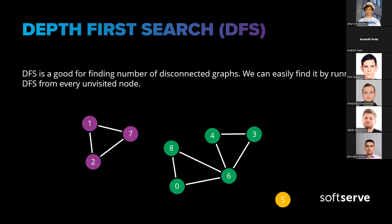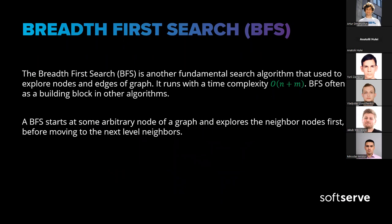Now let's look at breadth-first search (BFS). BFS is another fundamental search algorithm used to explore nodes and edges of a graph, running with time complexity O(N + M). BFS is often used as a building block like DFS, but it's particularly useful for finding the shortest path on an unweighted graph. BFS starts at some arbitrary node and explores all neighbor nodes first before moving to the next level of neighbors.